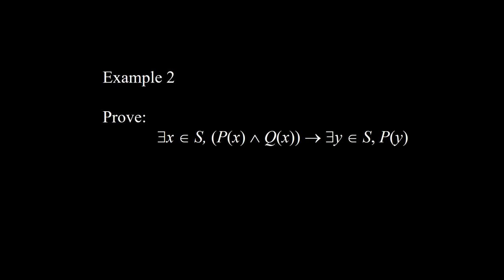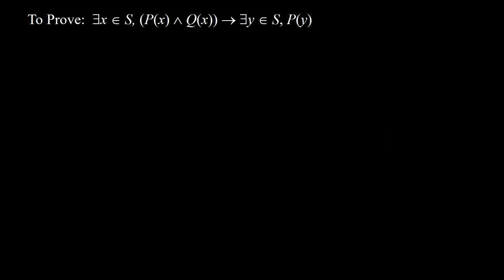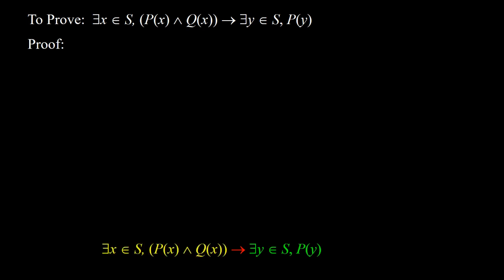Example 2: prove that for some x element of s, px and qx, implies for some y element of s, py. This is an implication consisting of the premise on the left, indicated with yellow, and the conclusion on the right, indicated with blue. So that is what we are going to prove, and here is the proof.